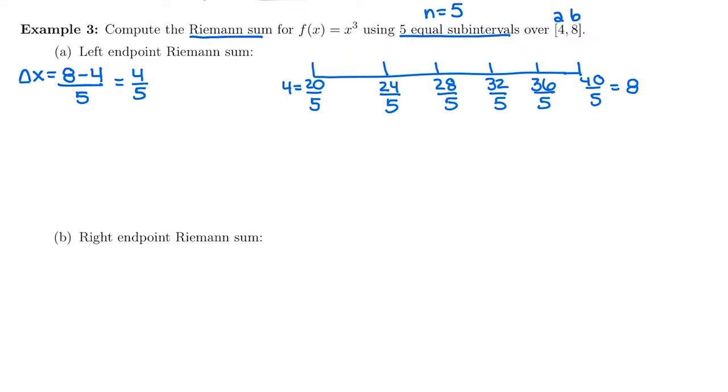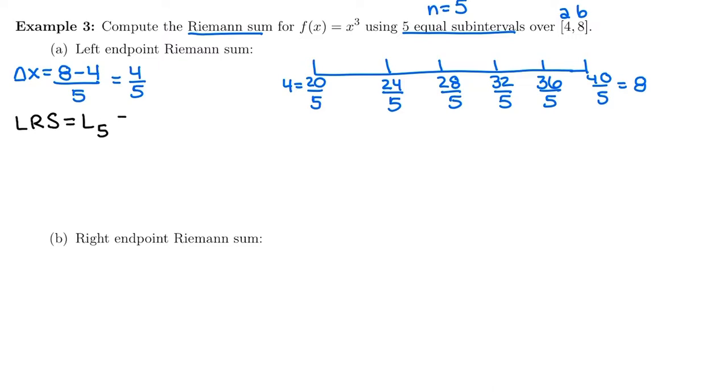All right, so now we are ready to choose our left endpoints. So we have five subintervals, which means we're going to choose five x_i's to plug in for our left Riemann sum, or if you want to use the other notation, L₅, left Riemann sum with five subintervals. So we're going to have our width, which is 4/5, times each height that we need to plug in. So we need to figure out between 20 and 24, that 20/5 or 4 is on the left.